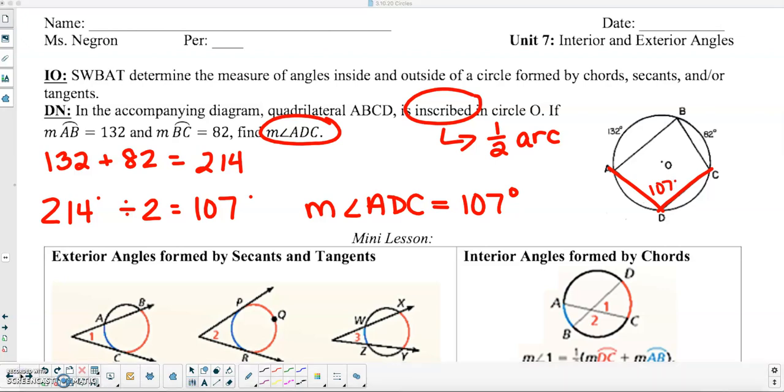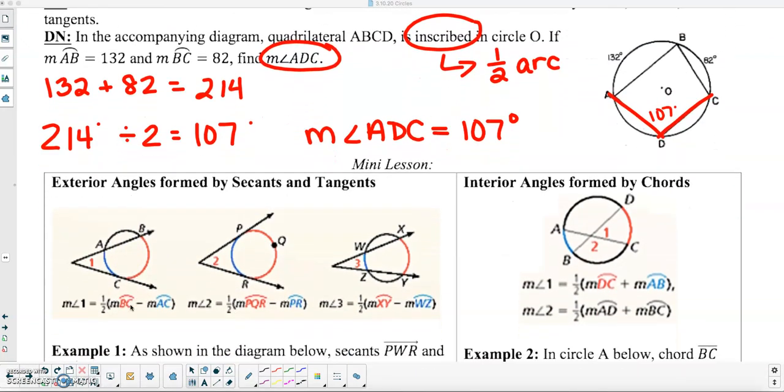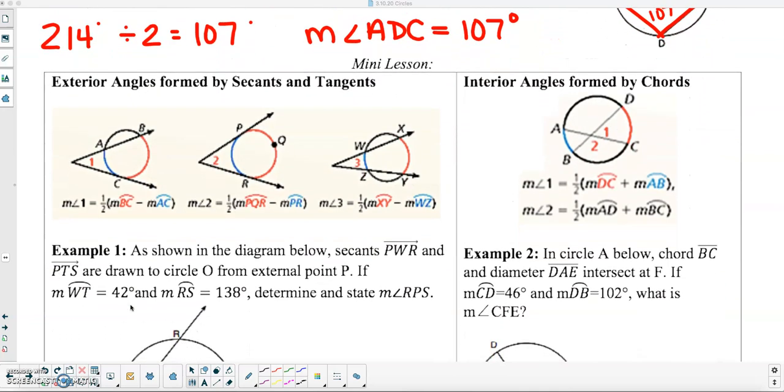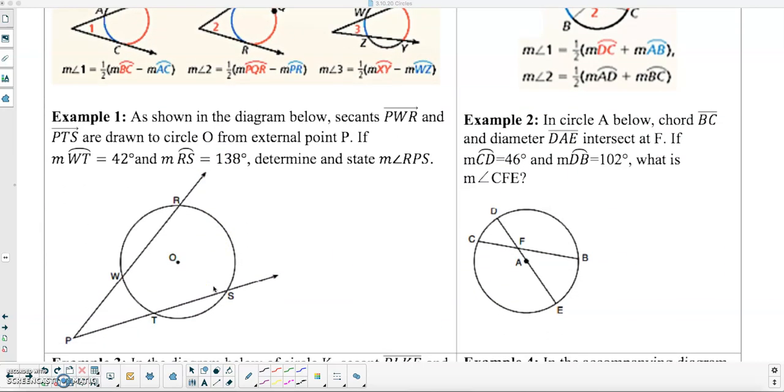So moving on to the mini lesson, we're going to be talking about exterior angles formed by secants and tangents, as well as interior angles formed by chords. They are very similar concepts here. For the exterior angle, you're going to actually subtract the arcs, whereas for the interior angles, we're going to add them together. So let's look at example number one.